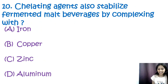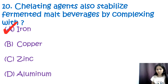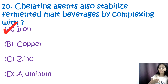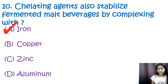Question 10: Chelating agents also stabilize fermented malt and beverages by complexing with — options are iron, copper, zinc, and aluminium. The correct answer is A, iron. Chelating agents are used in the food and beverage industries to complex with metal ions such as iron. This complexing action helps stabilize the product by preventing metal ions from catalyzing undesirable reactions such as oxidation, thus preserving the flavor and color of fermented malt and beverages.